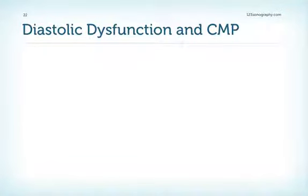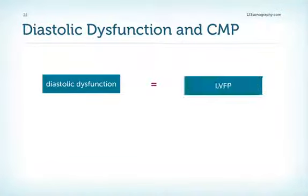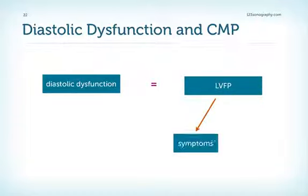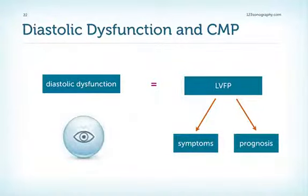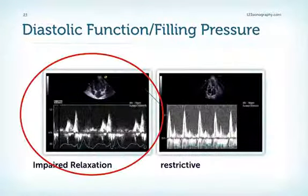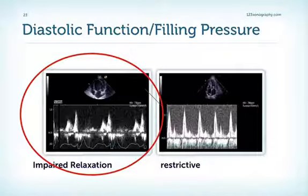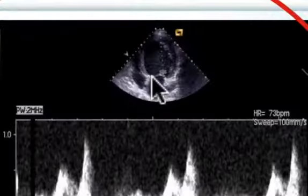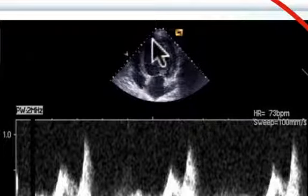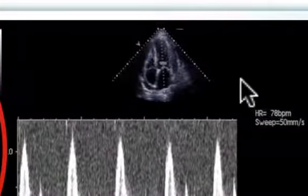From the chapter on diastolic dysfunction, we know that diastolic dysfunction relates to left ventricular filling pressures — elevated filling pressure means symptoms and a poor prognosis. Take a look at diastolic dysfunction to see how patients are doing. The patient on the left with impaired relaxation has lower filling pressures and therefore fewer symptoms, compared to the patient on the right with a restrictive filling pattern, even though that patient on the left appears to have a more severe form of dilatation echocardiographically.